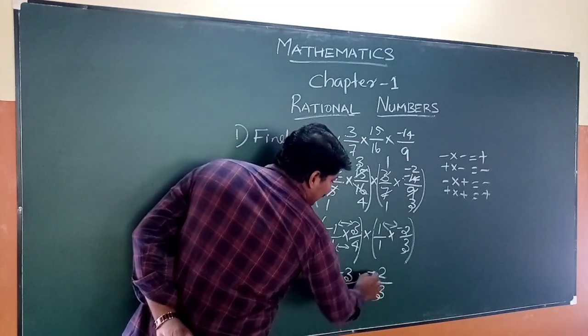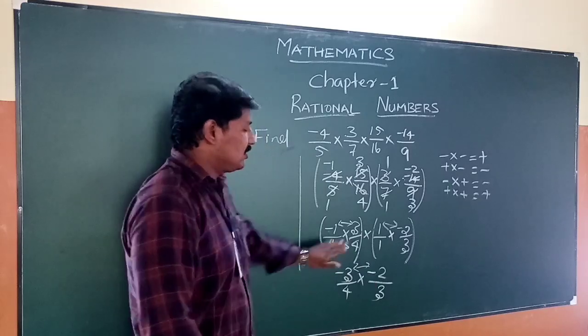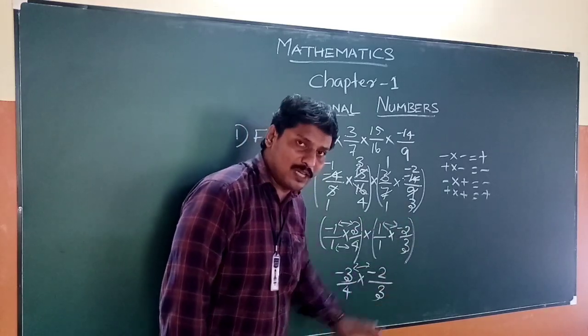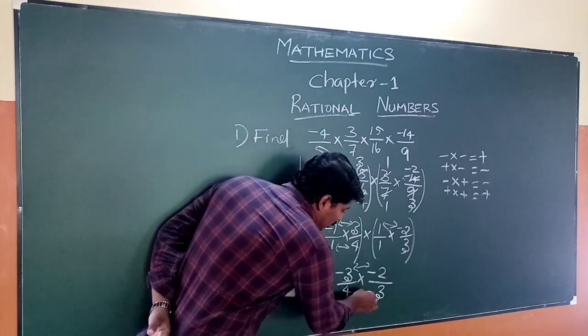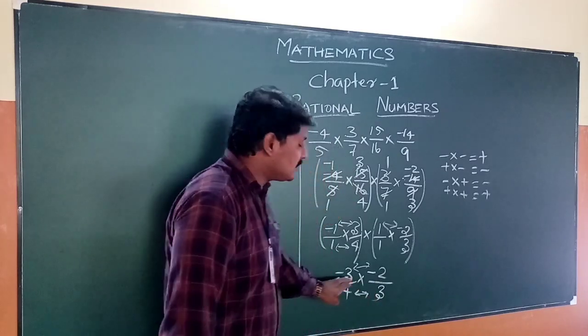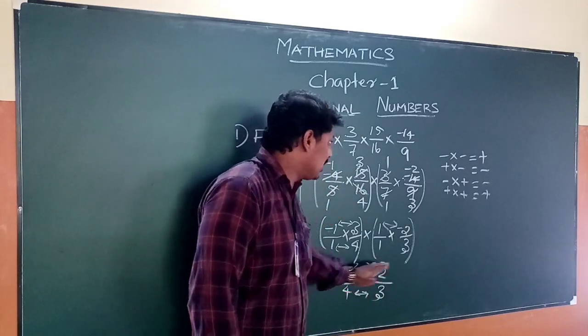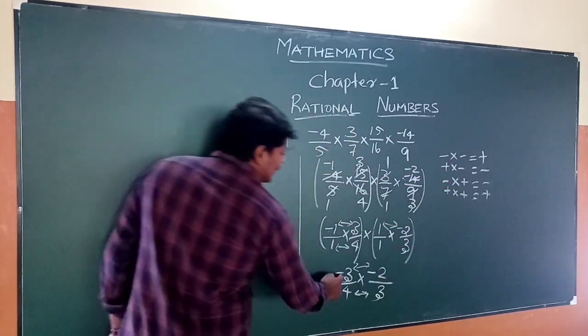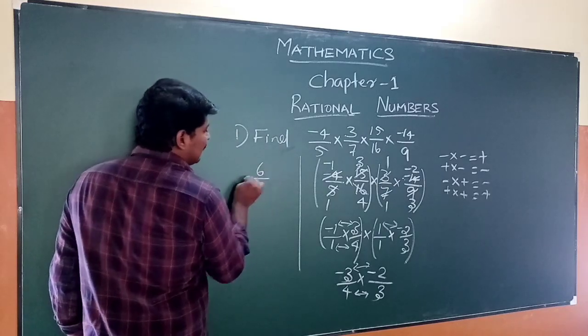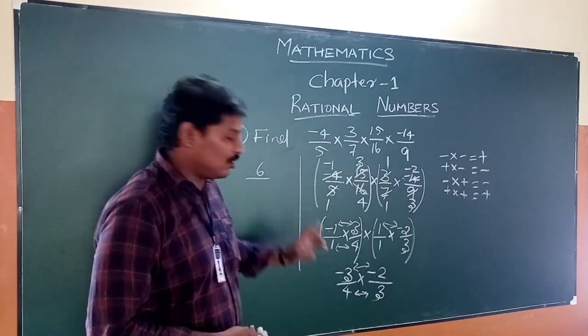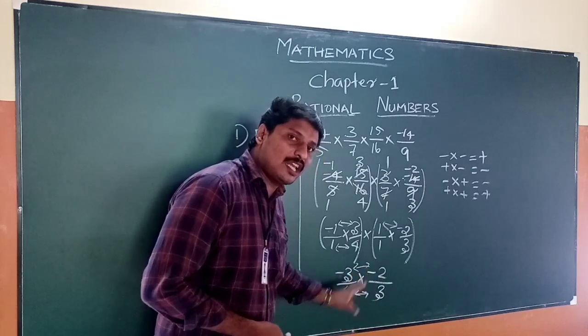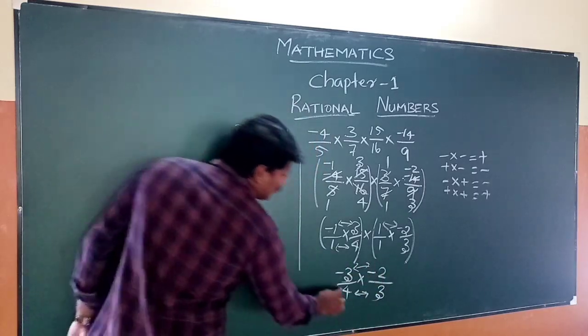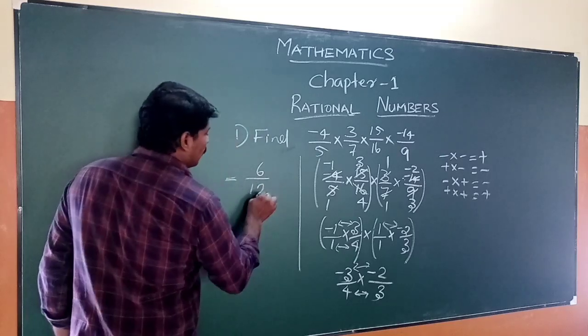Working out the multiplication: -3 in the numerator with 2 × 3 in the denominator. Minus times minus gives plus, so 3 × 2 = 6 divided by 4 × 3 = 12.